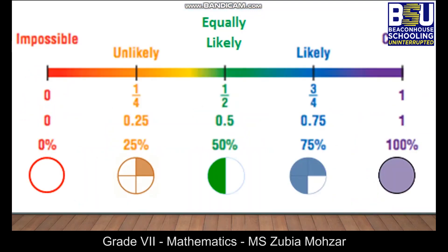You can see that we can use different ways to express different events — in fraction form, decimal form, or percentage form. For example, 1/4 represents an unlikely event; in decimal form it is written as 0.25, or 25 percent. Half represents an equally likely event.